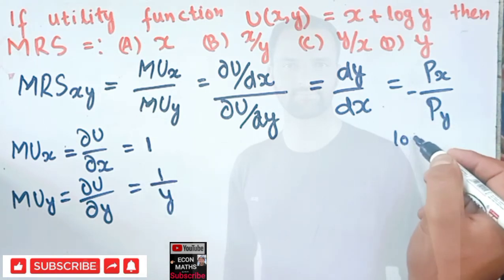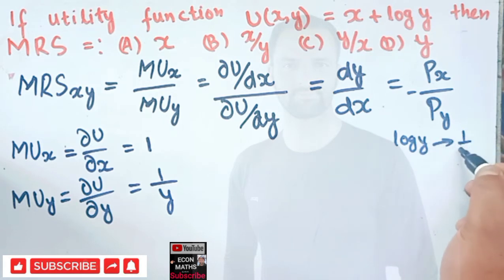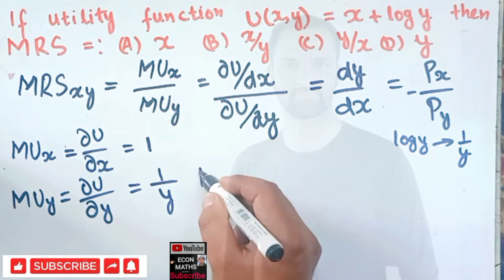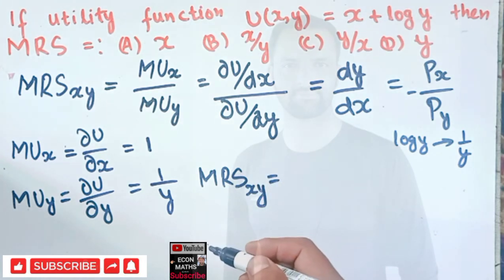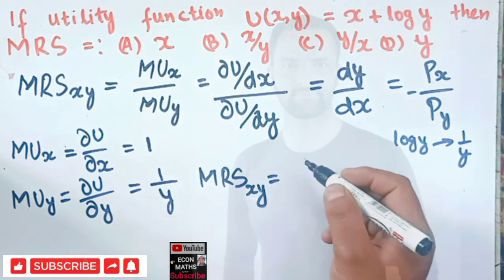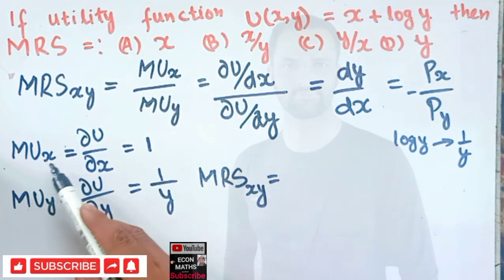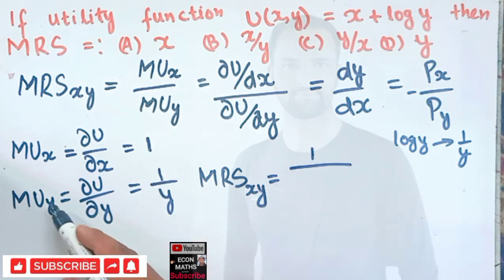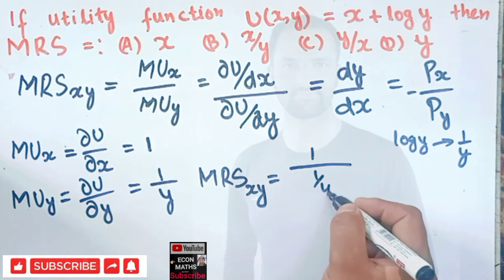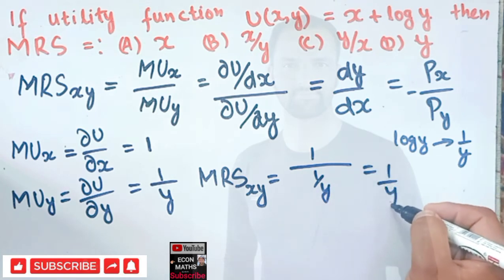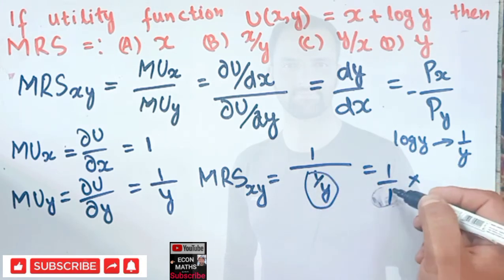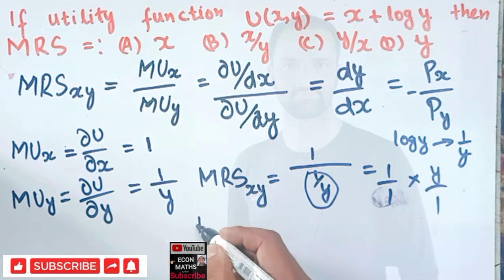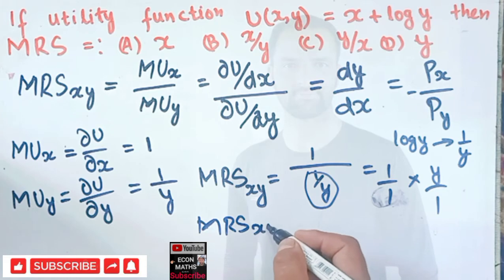Now we apply the formula. Marginal rate of substitution between x and y equals marginal utility of x over marginal utility of y. Marginal utility of x is 1, and marginal utility of y is 1 over y. So MRS equals 1 divided by (1/y), which when we reciprocate gives us y over 1.